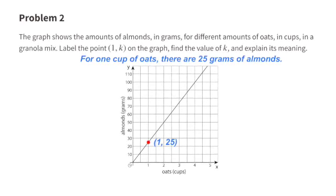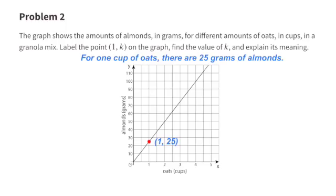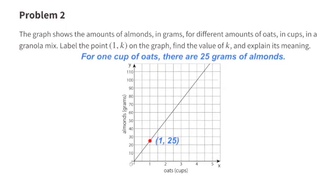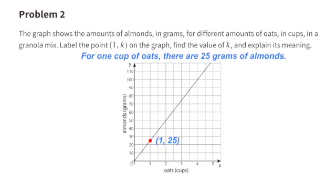For one cup of oats, there are 25 grams of almonds. So in this case, the unknown K would be 25, and that represents 25 grams of almonds.